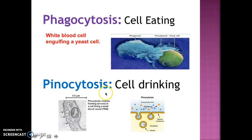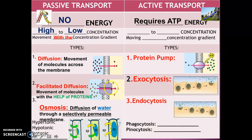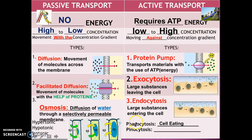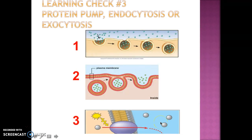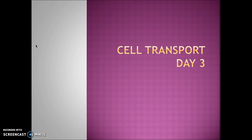Two additional related examples: phagocytosis means cell eating, where cells eat solid particles, like white blood cells engulfing a cell — you can look up videos of this. Pinocytosis is cell drinking, where cells take water in and put it in organelles. Finally, there's a last check for understanding — identify which is endocytosis, which is exocytosis, and which is protein pump. That concludes this video. I hope you find it interesting. See you next time, and thank you for watching.